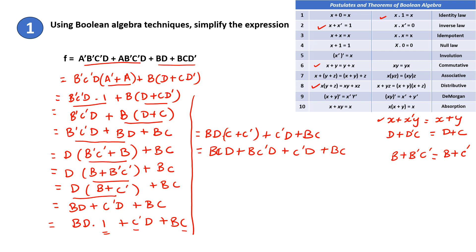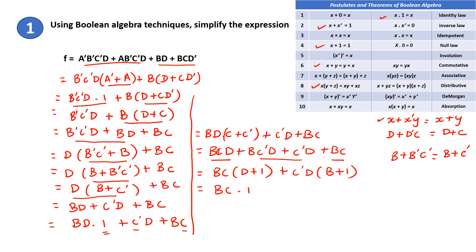Next take these two terms and take BC as common, so you get D plus 1. Then take C'D as common from the other two terms, giving B plus B times C. D plus 1 is 1 as per the identity law, plus C'D times 1. So BC times 1 is BC by the identity law, and C'D times 1 is C'D. So this is the simplified Boolean expression.